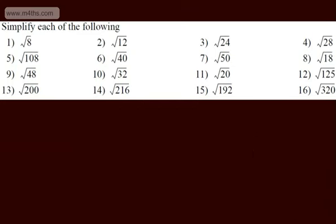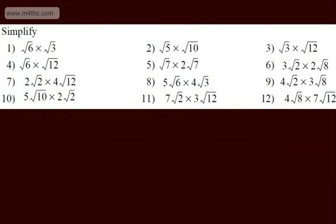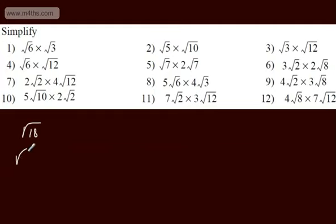OK, let's move on to simplifying when we're multiplying. The rule is: when we multiply, if we get root a multiplied by root a, we end up with a. So if we look at the first one, we've got root 6 multiplied by root 3. We can write this all under one root as root 18.